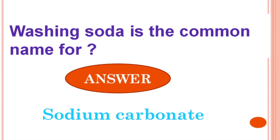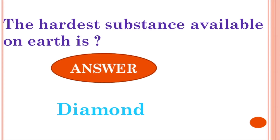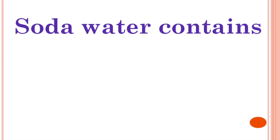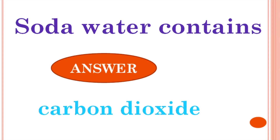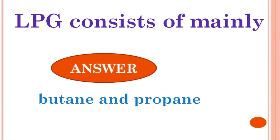The formula is Na₂CO₃ and it has various hydrates. The hardest substance available on earth is diamond. Diamond is regarded to be the hardest known material in the world. Soda water contains carbon dioxide.